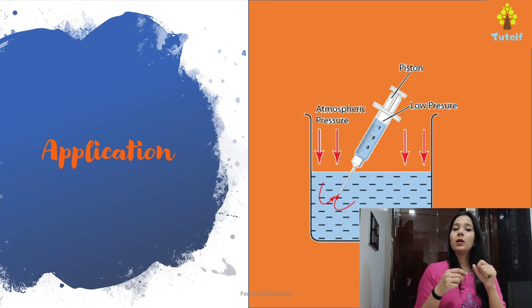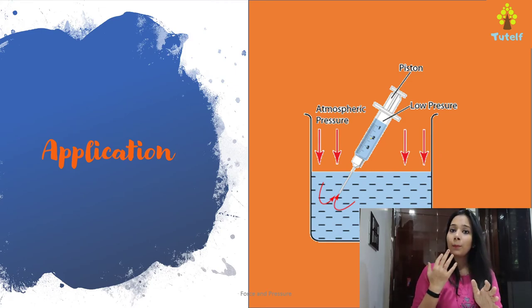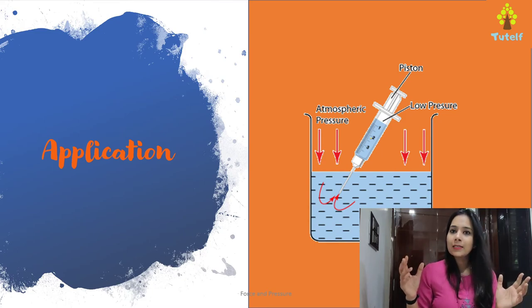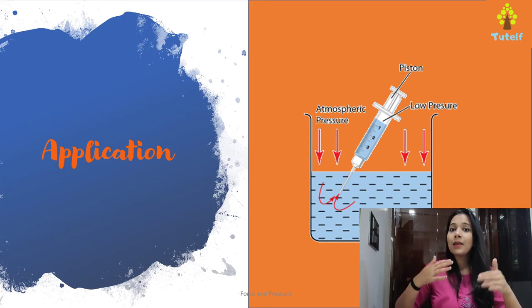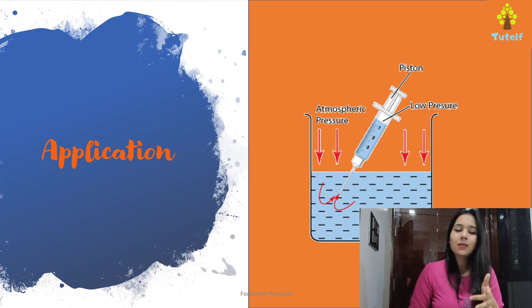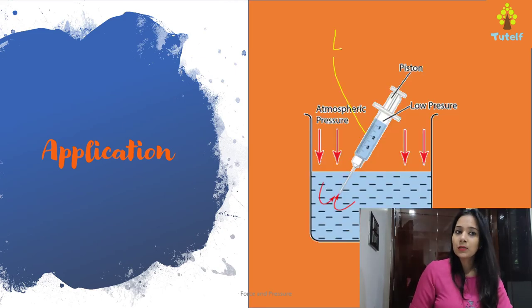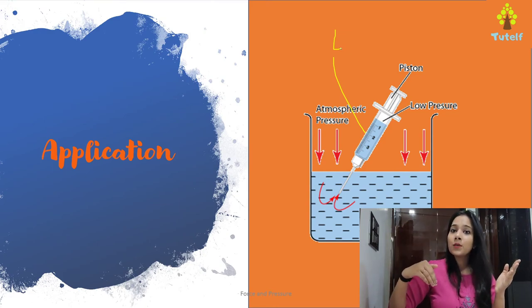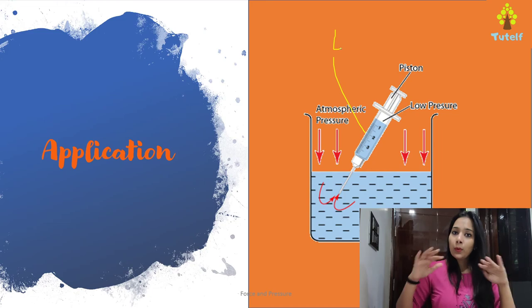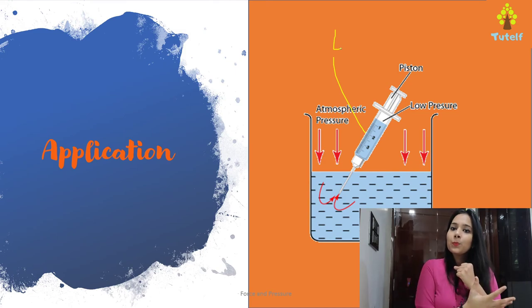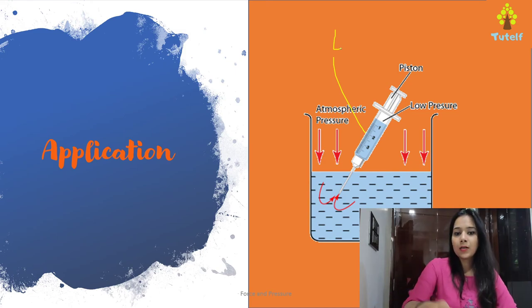How does a syringe work when you pull the piston and water is pulled up? As soon as you pull the piston, the number of particles stays the same but the area increases. Since pressure and area are inversely proportional, pressure decreases as area increases, so we have low atmospheric pressure inside the piston. Outside, atmospheric pressure is more; inside it is less. So the liquid gets sucked in — it is pulled up because of the difference in atmospheric pressure.